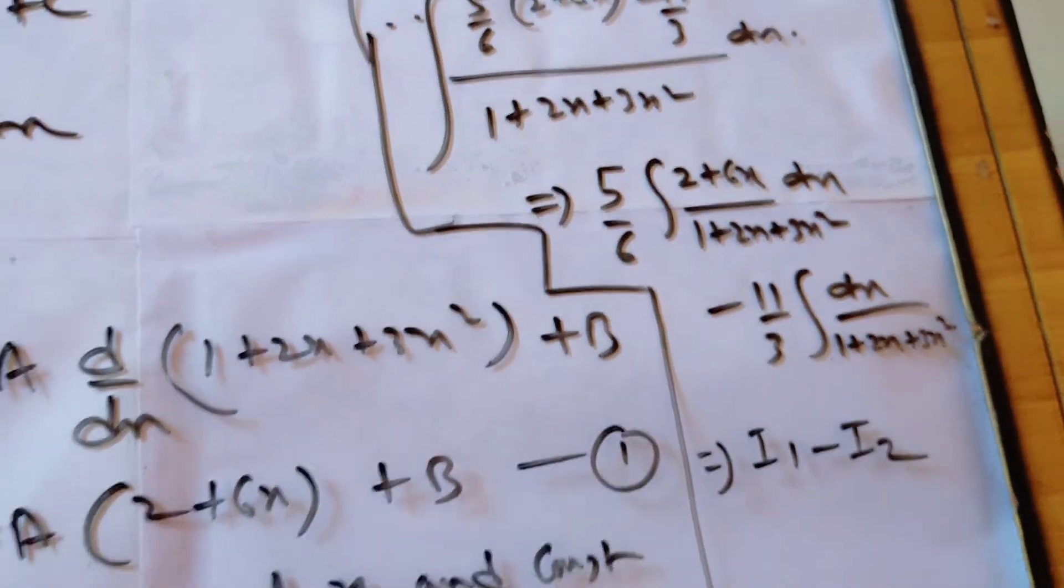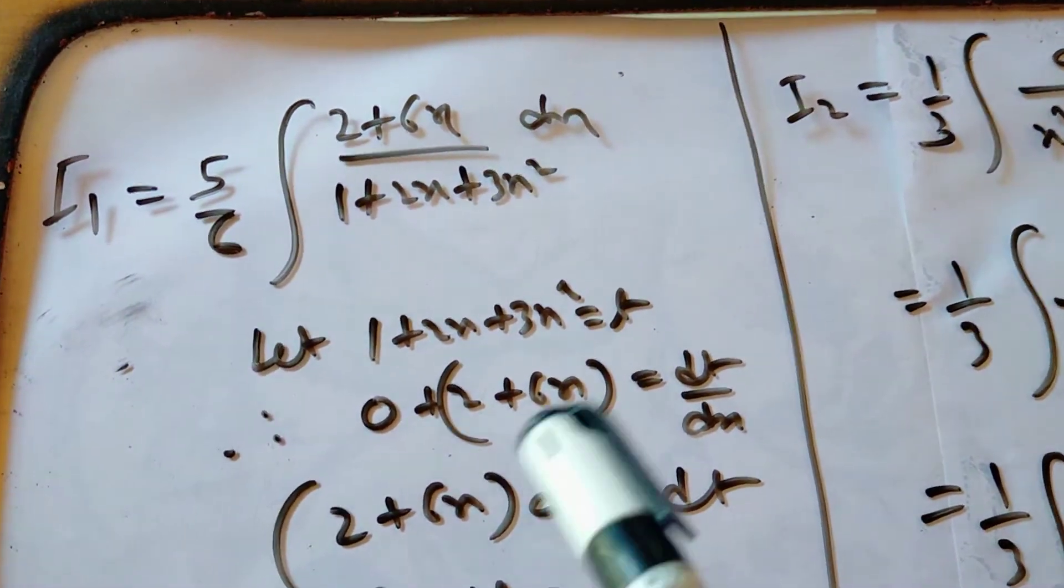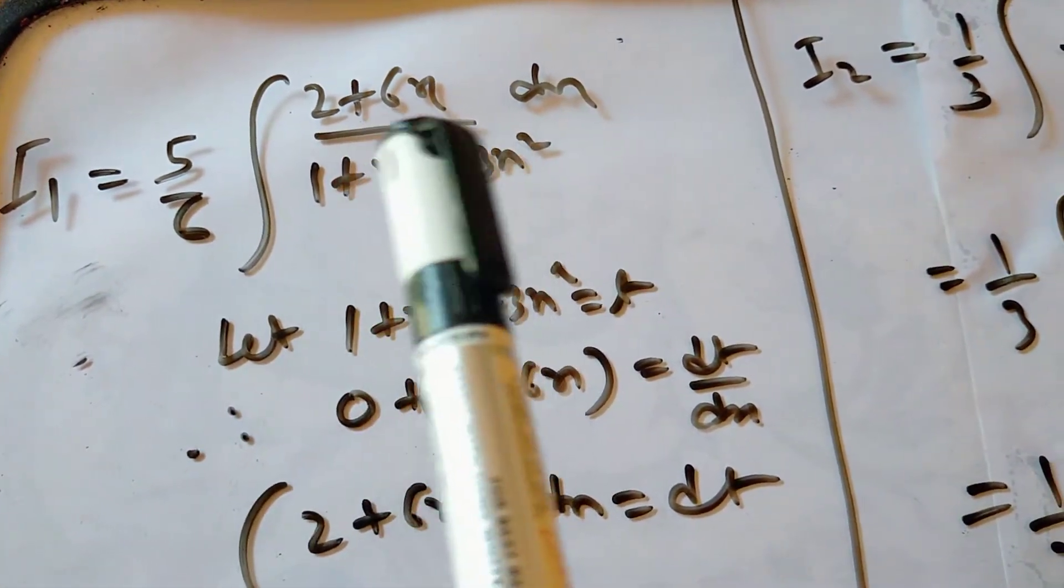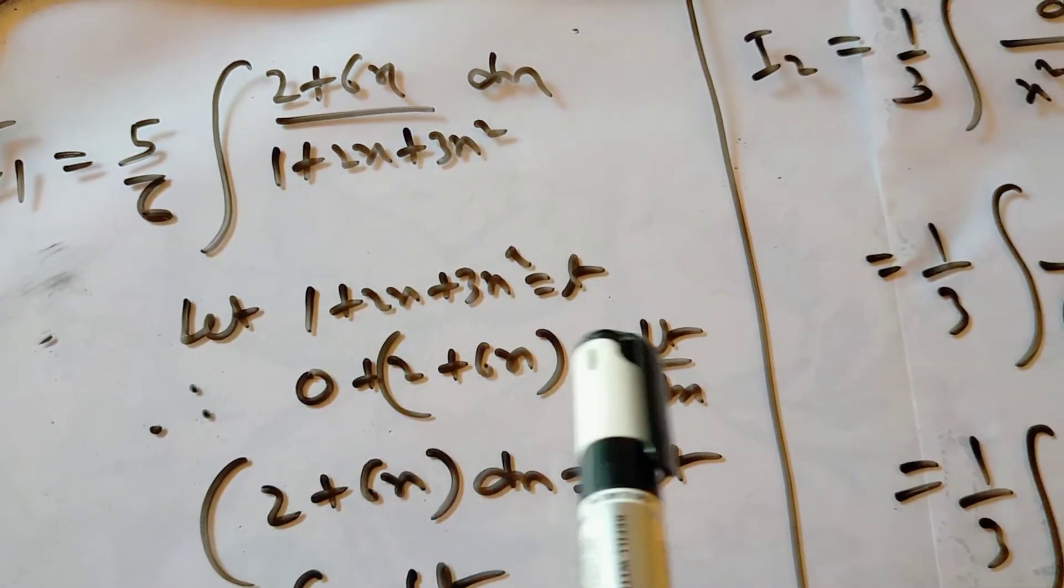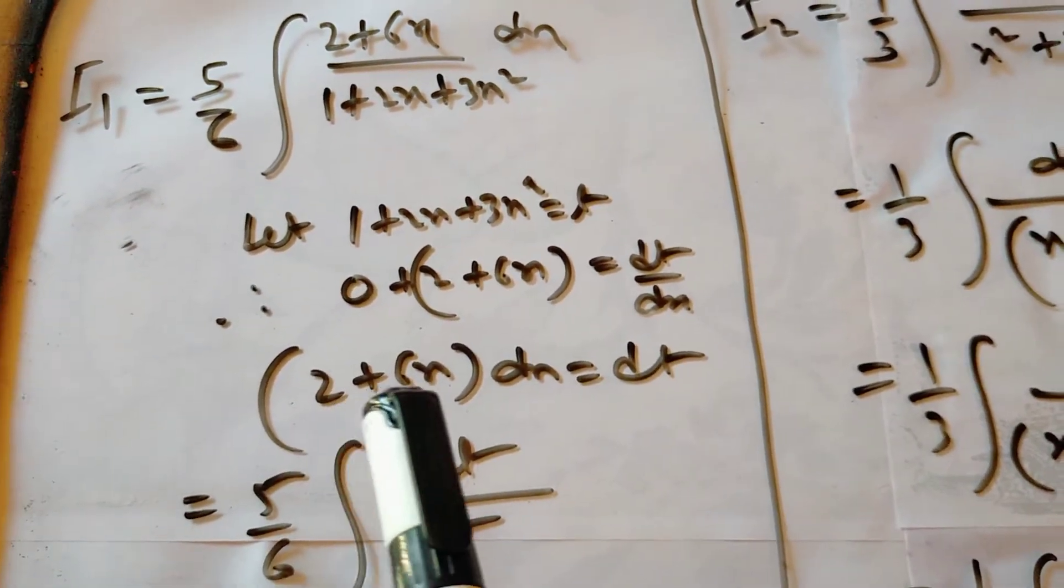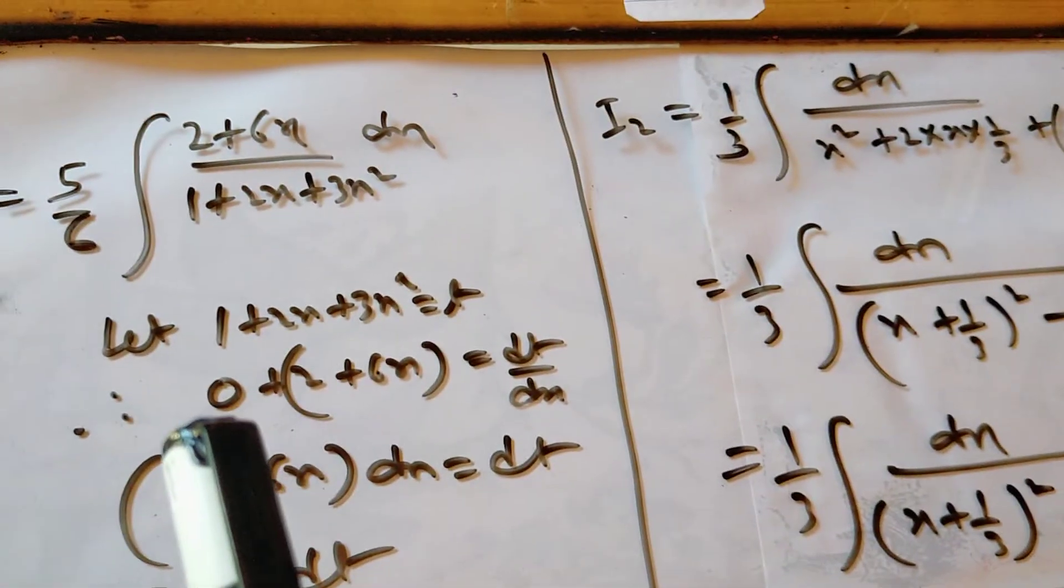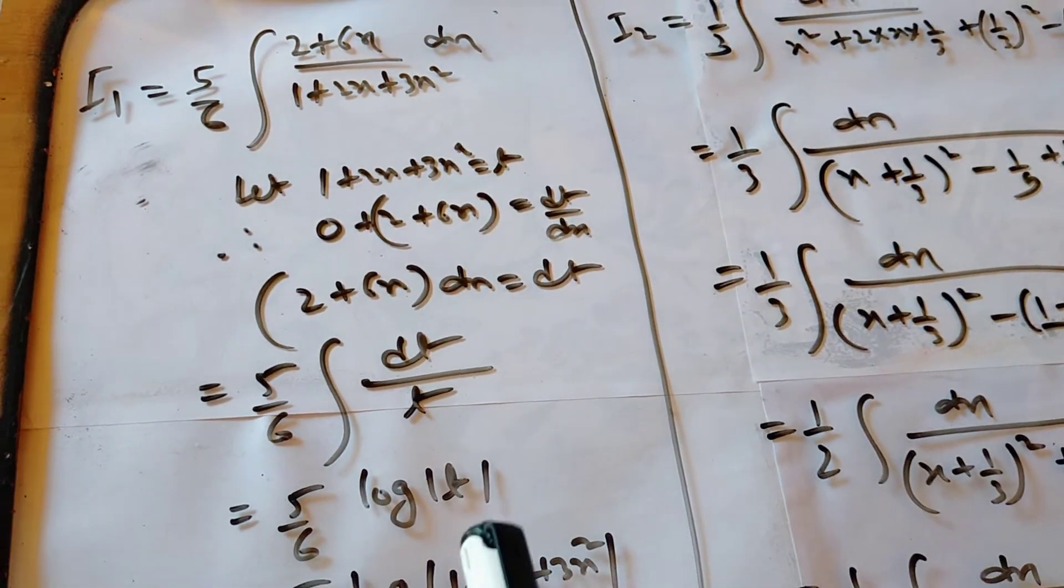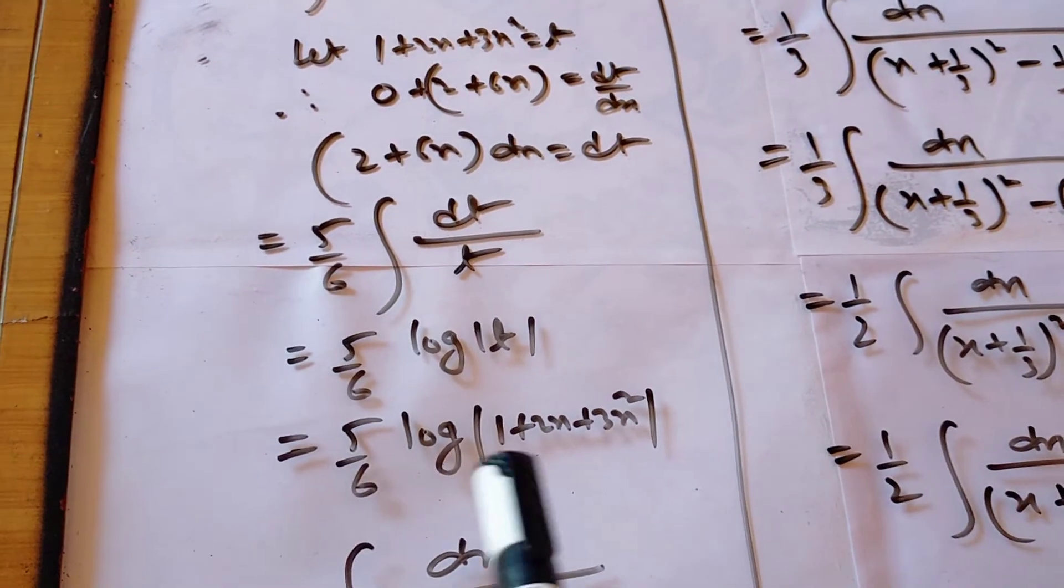So here we are going to simplify I1. I1 is 5 by 6 into this. So here we have given the denominator, and when we have to differentiate it, it is 2 plus 6x dx equal to dt. And 2 plus 6x dx is in the numerator. So we have dt upon t form. And this is our log t. And we substitute to get I1 value. Now, I2.